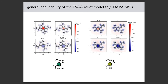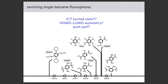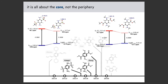The NICS value map is very consistent. Now, prior to our work there were many beautiful examples of single-benzene fluorescence, but did they really understand what's going on? It is not intramolecular charge transfer, not HOMO-LUMO asymmetry, not push-pull. We even revisited the classical examples from Katagiri and Zhang — our excited-state antiaromaticity relief model works beautifully with both systems. It is about the core, not the periphery; the periphery helps push the absorption energy into the visible, but the large Stokes shift is due to skeletal rearrangement of the benzene itself.